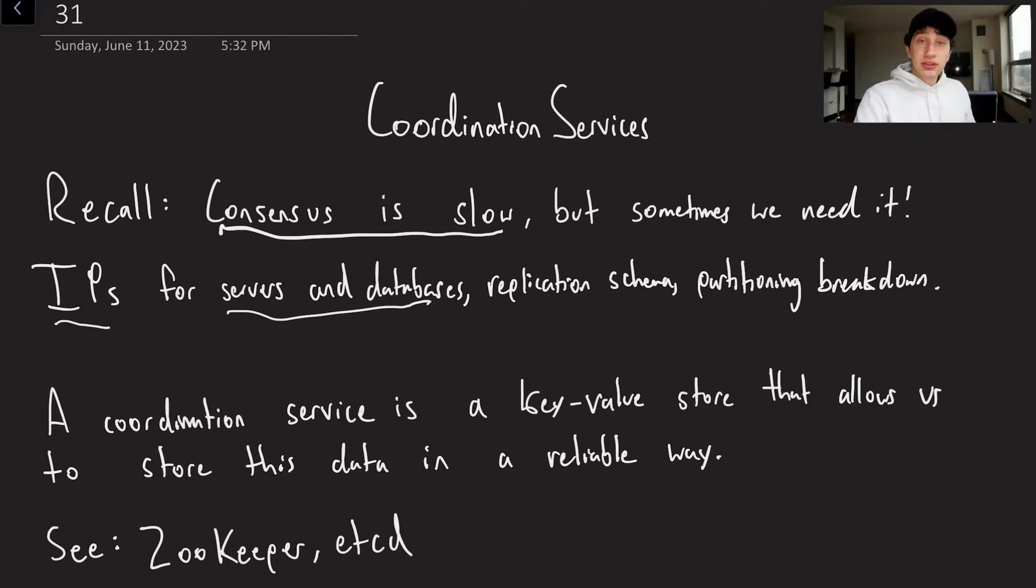So what are some examples of modern day coordination services? Well, the two that you've probably heard of, or at least may sound familiar, would be Zookeeper or Etcd. Etcd runs on Raft. Zookeeper runs on its own thing called Zab that's similar to Raft. But the point is they're using distributed consensus.